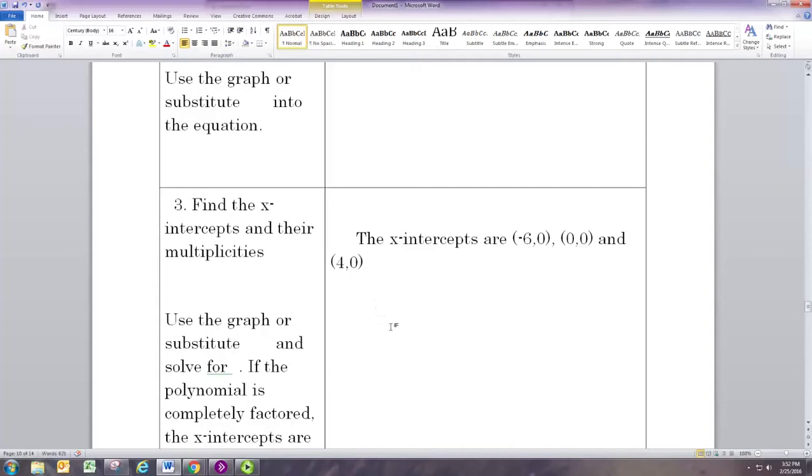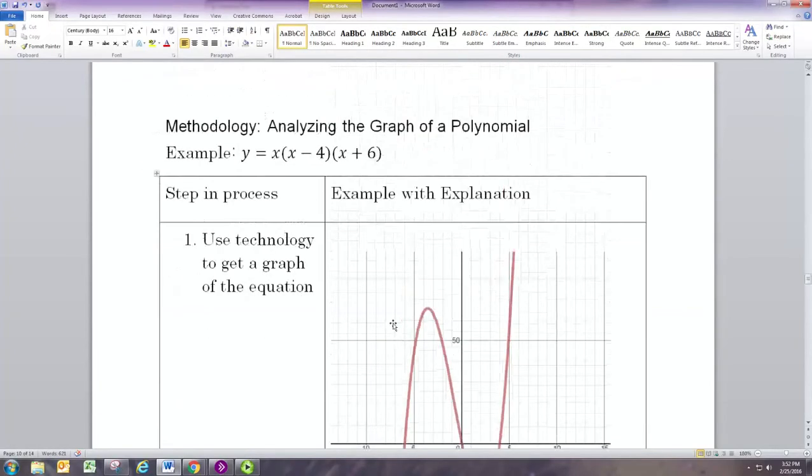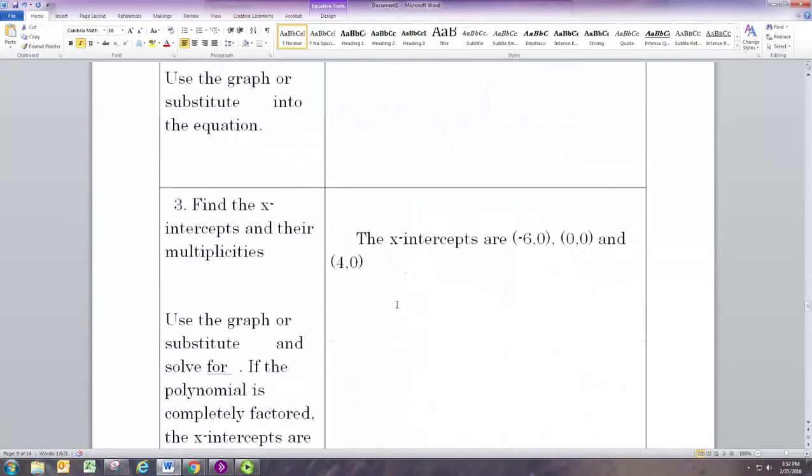The way to find the x-intercepts from the equation is to let y be zero. If y is zero here, you can see that it's already factored, and the zero factor property will allow you to see that you could get x equal to zero, x minus four equal to zero, and x plus six equal to zero. Each of those equations would lead you to the numbers zero, four, and negative six.